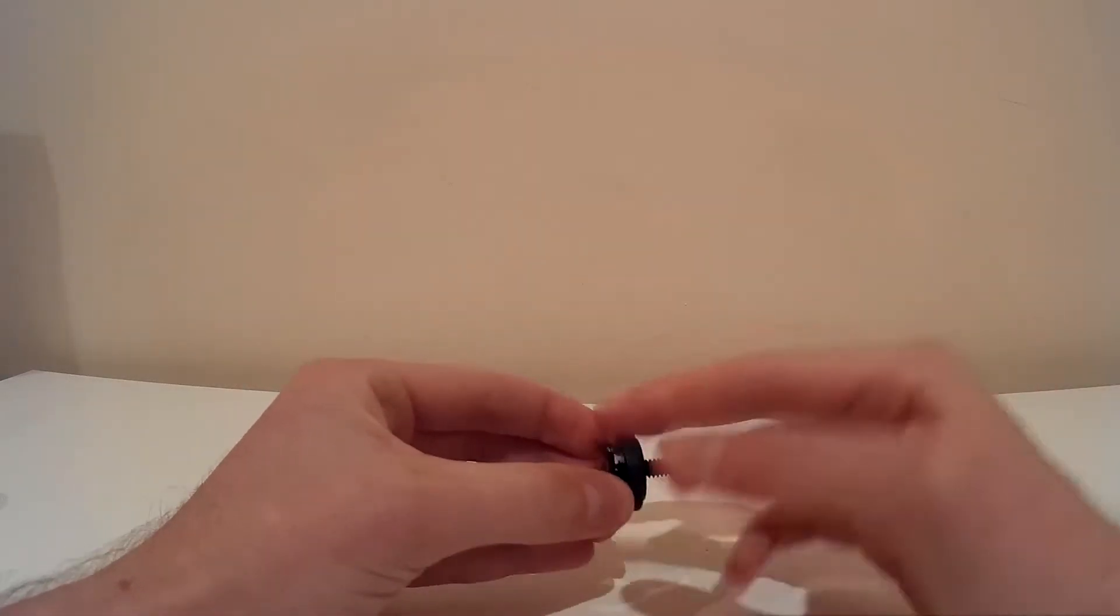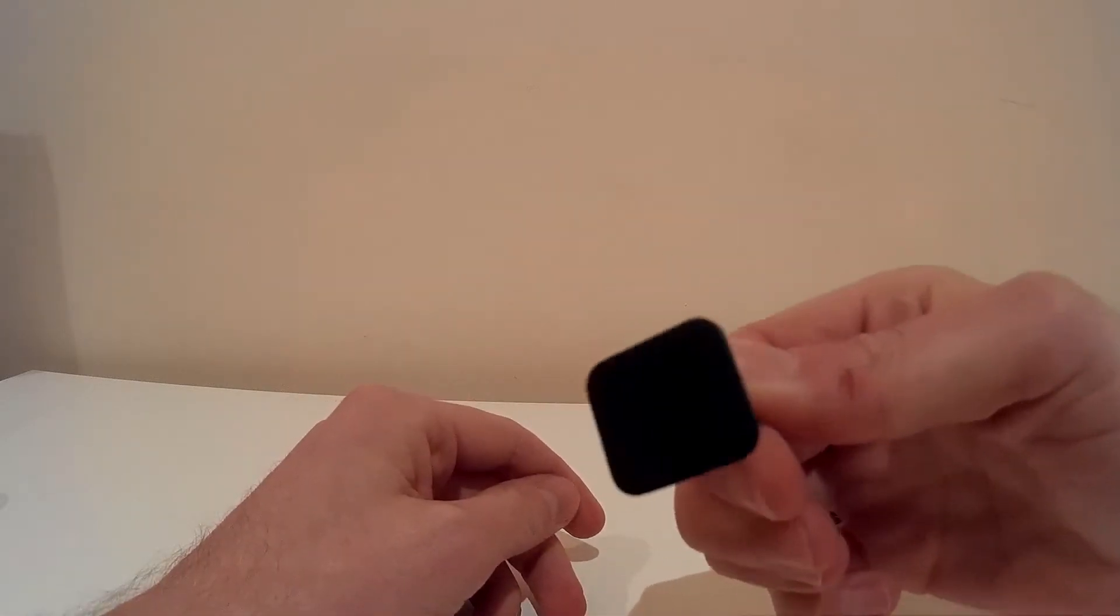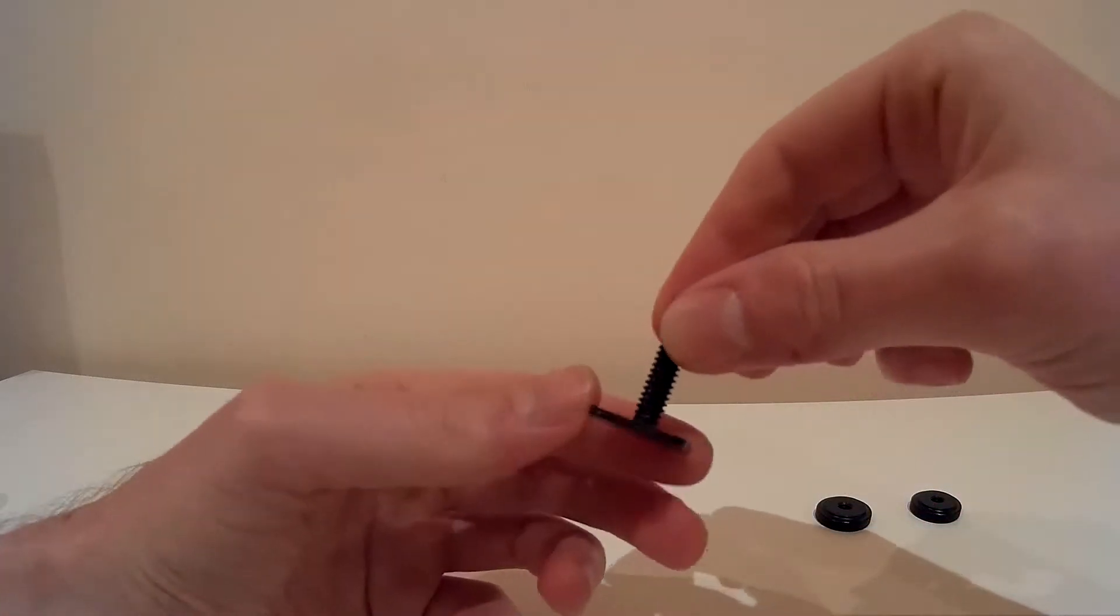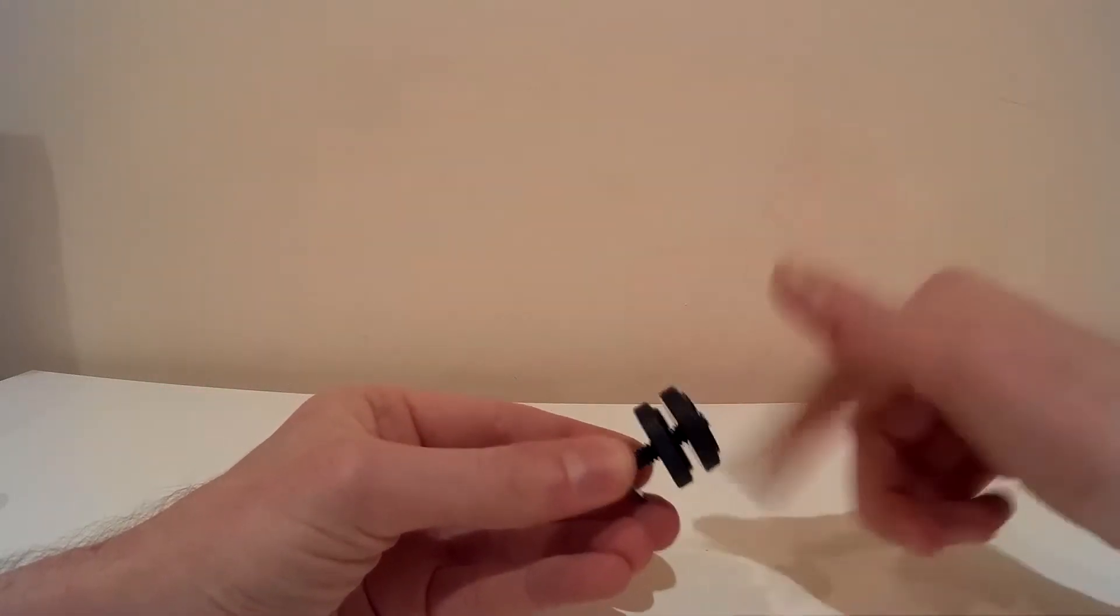Next we've got a hot shoe tripod mount adapter. This is usually used for attaching to your SLR camera and then attaching a smaller camera to the top. But in our case we'll use this to attach our GoPro to a handlebar grip.